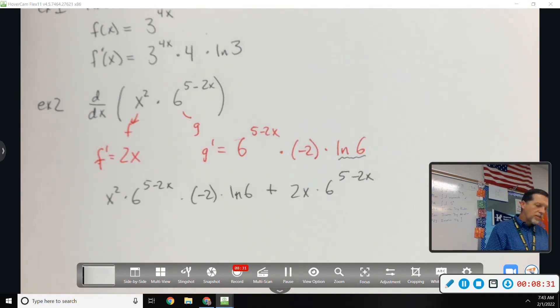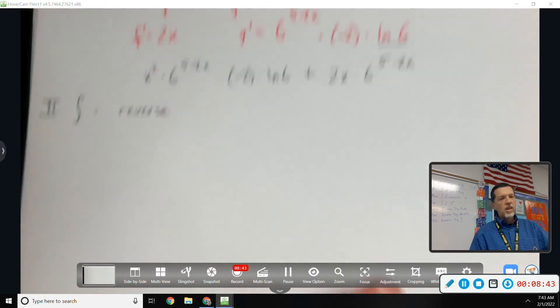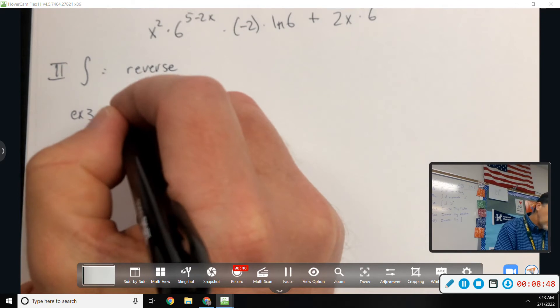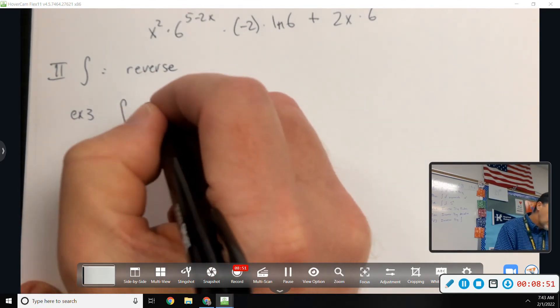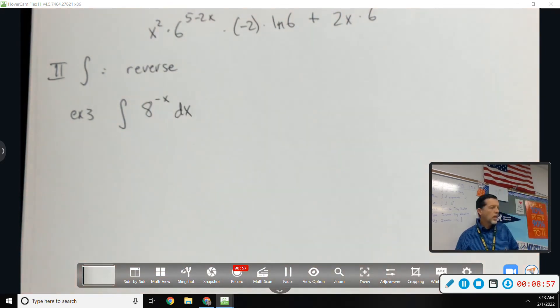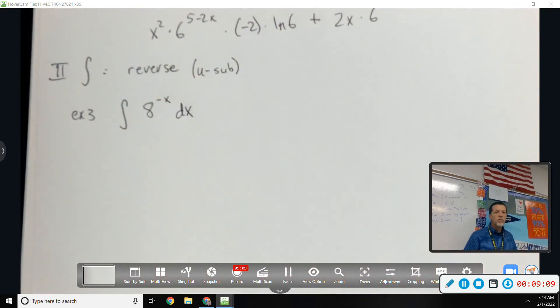All right, that's driving forward. Now let's drive in reverse. Let's integrate. Going backwards. So let's integrate 8 to the negative X DX. Integral of 8 to the negative X DX. Anytime we're reversing, we better be careful about use of, or not be careful about, be alert for it. We might need to use it.